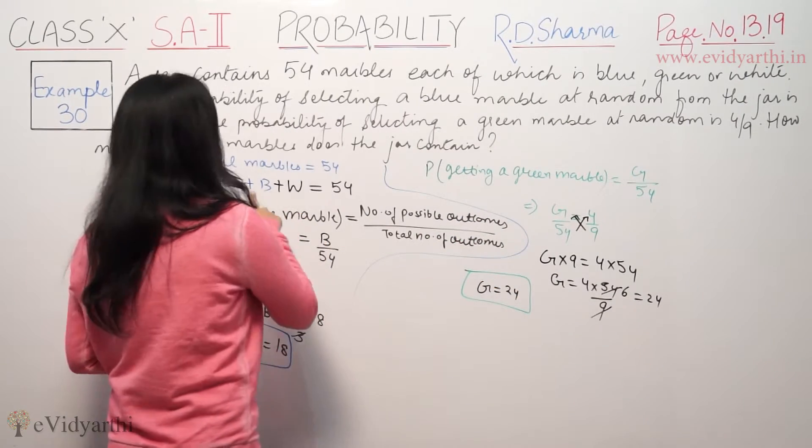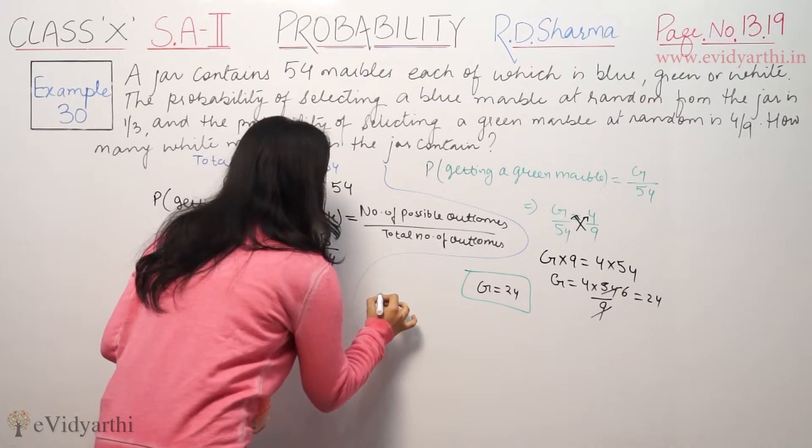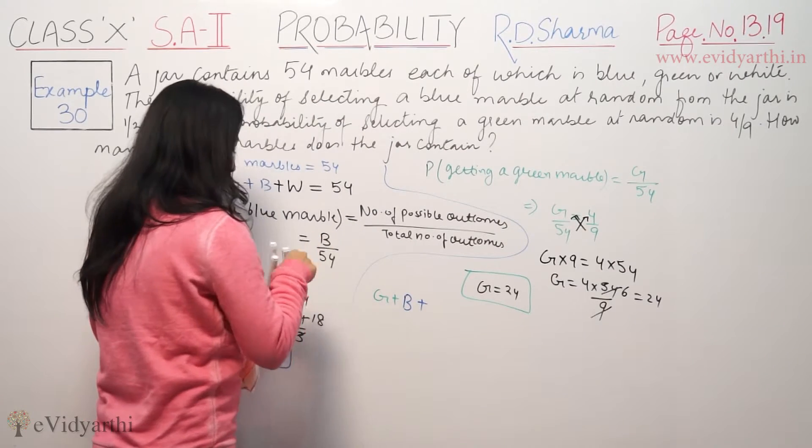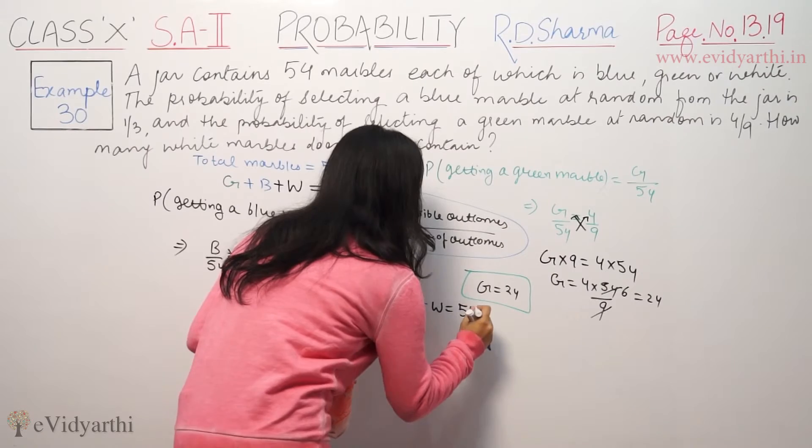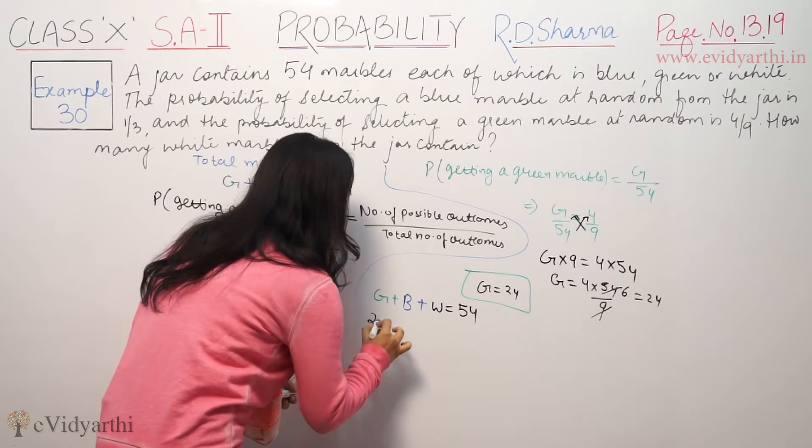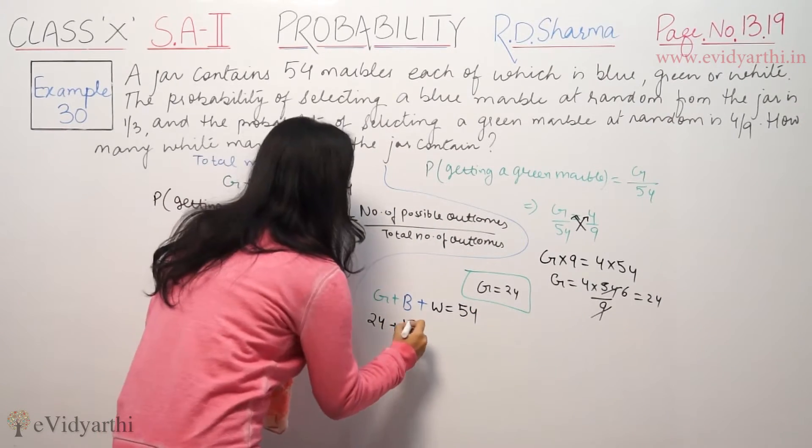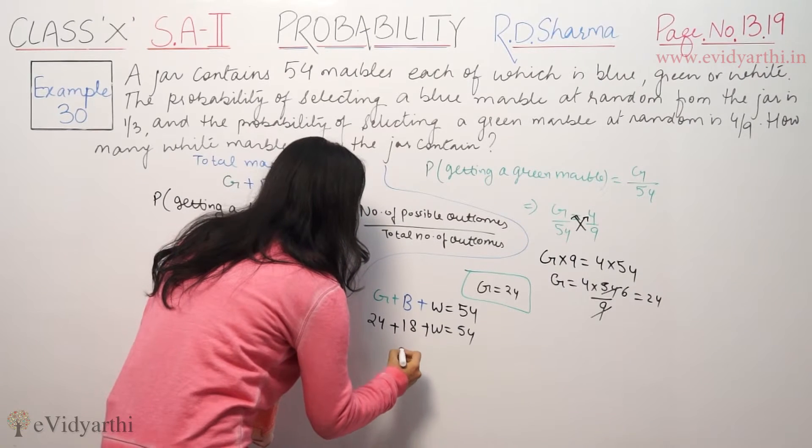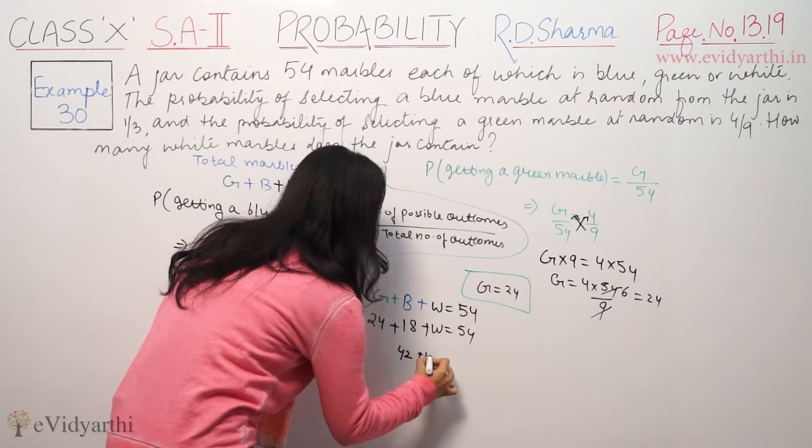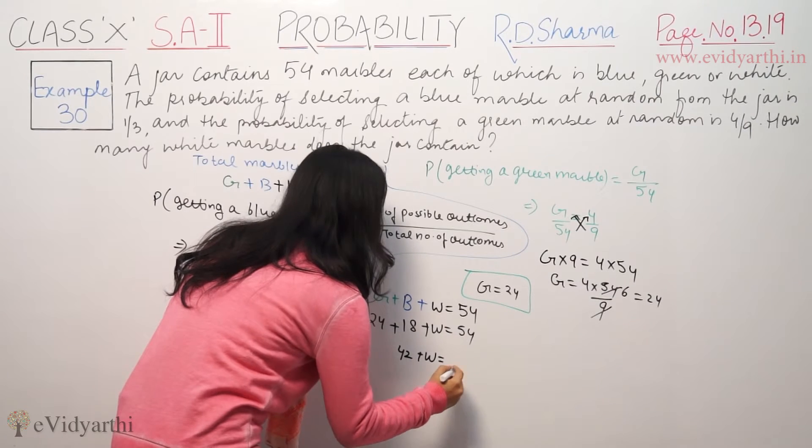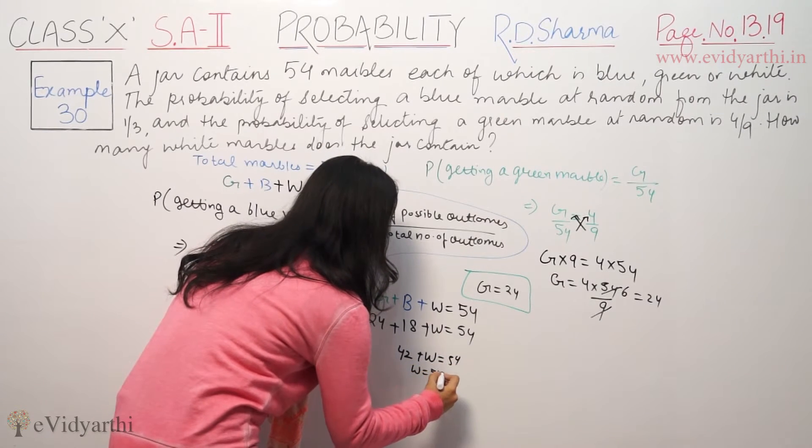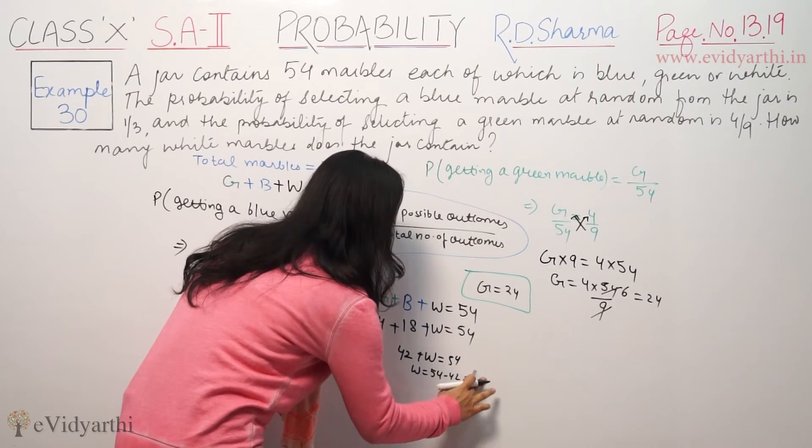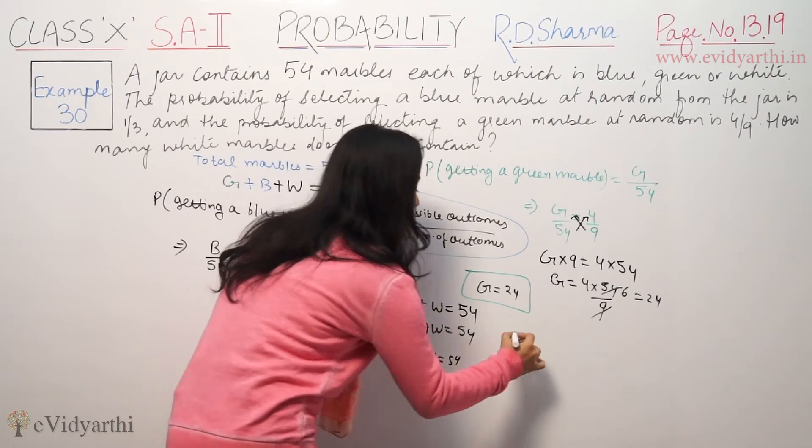Now the formula says green plus blue plus white is 54. So white equals 54 minus green minus blue. White equals 54 minus 42, which is 12. So white marbles are 12.